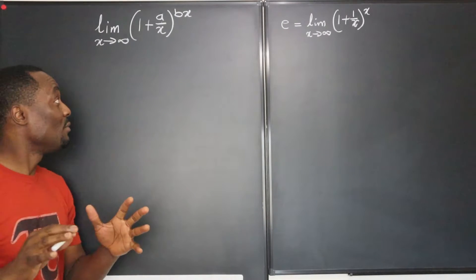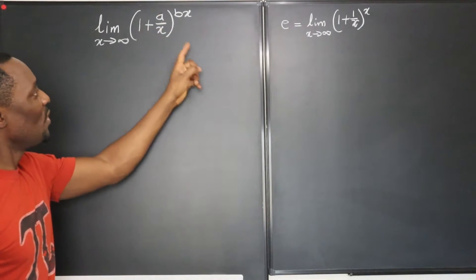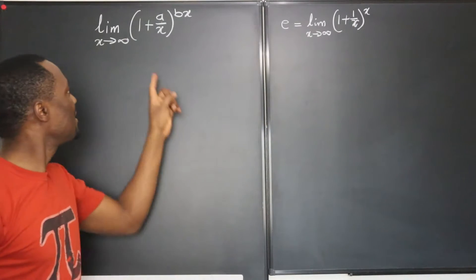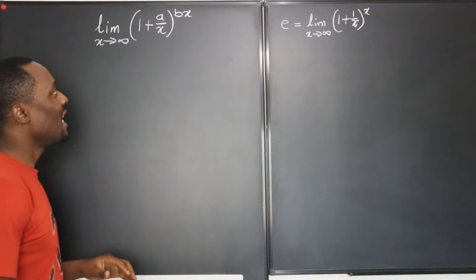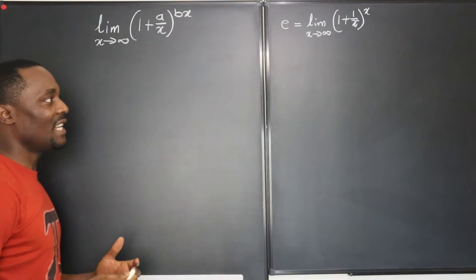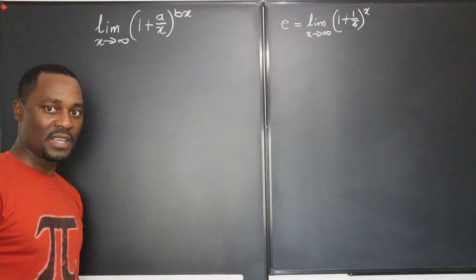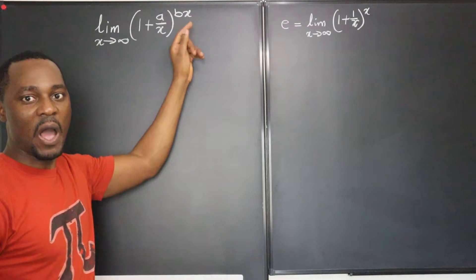So the first attempt you want to make is to make sure that this looks like 1 over x. This is not a problem. This is a problem and this is a problem. Let's rewrite this so that it looks like 1 over something, and we'll see how to put that something out here.